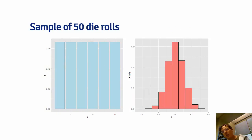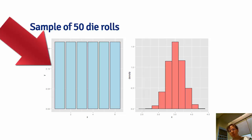So consider this example. Imagine if we wanted to evaluate the behavior of the average of 50 die rolls. So our population distribution is this left-hand distribution, the equally weighted bars with the values 1 through 6.